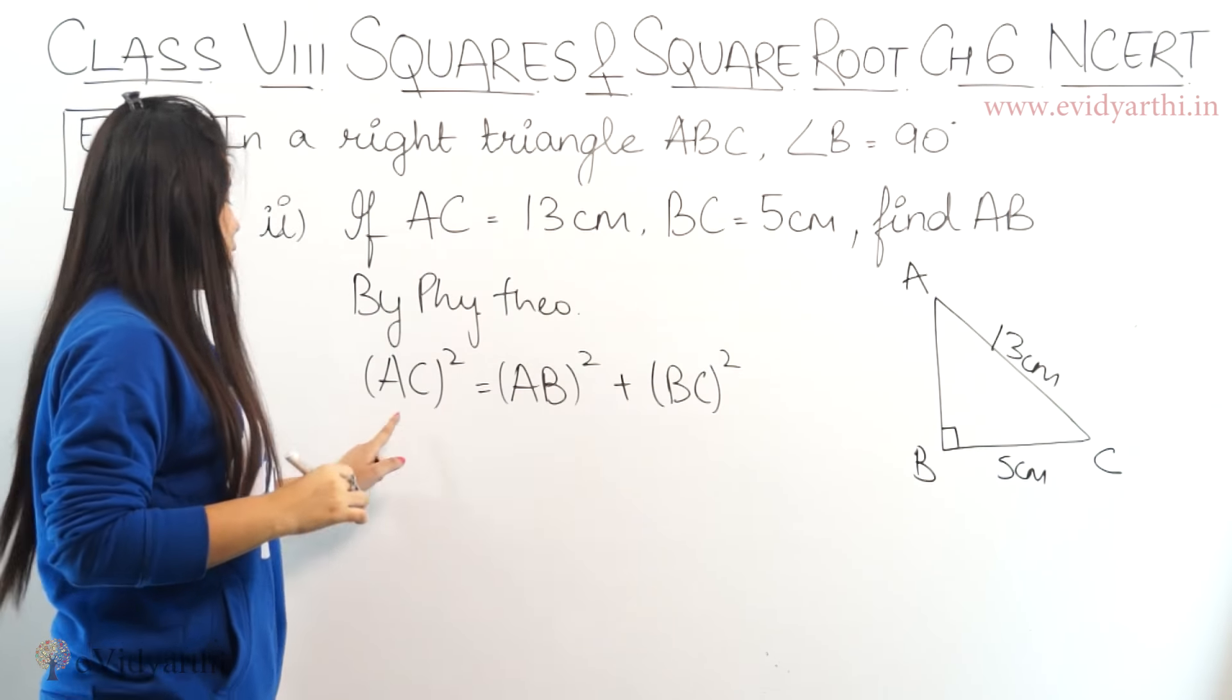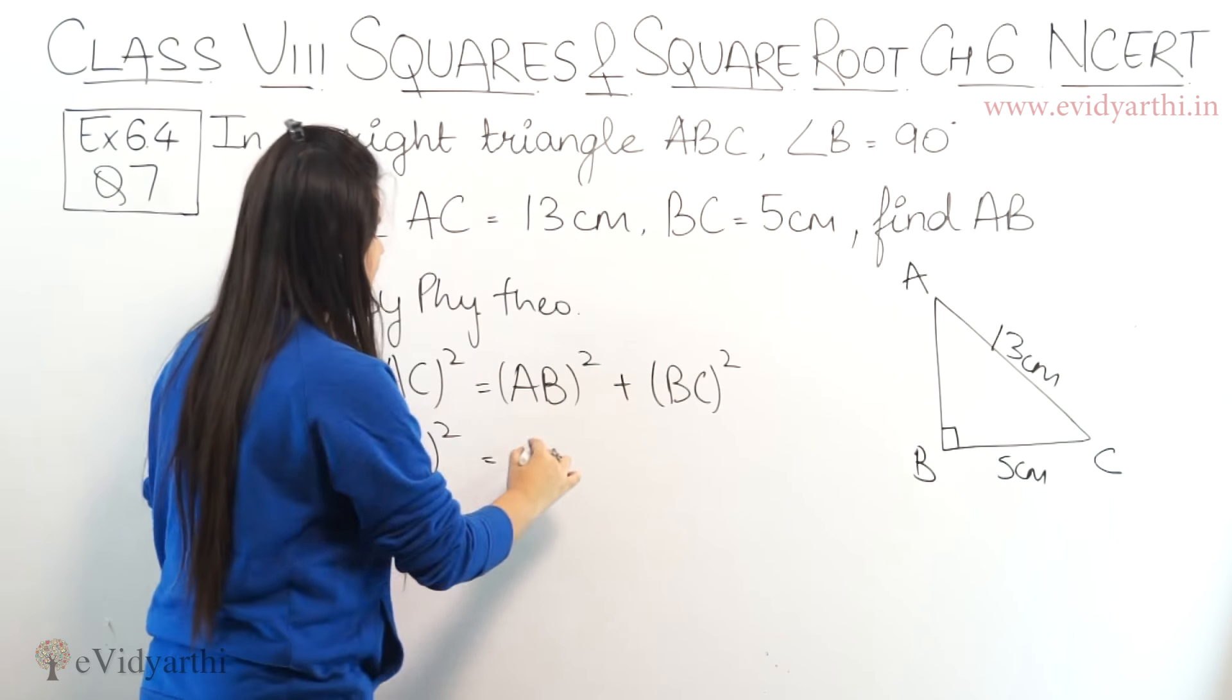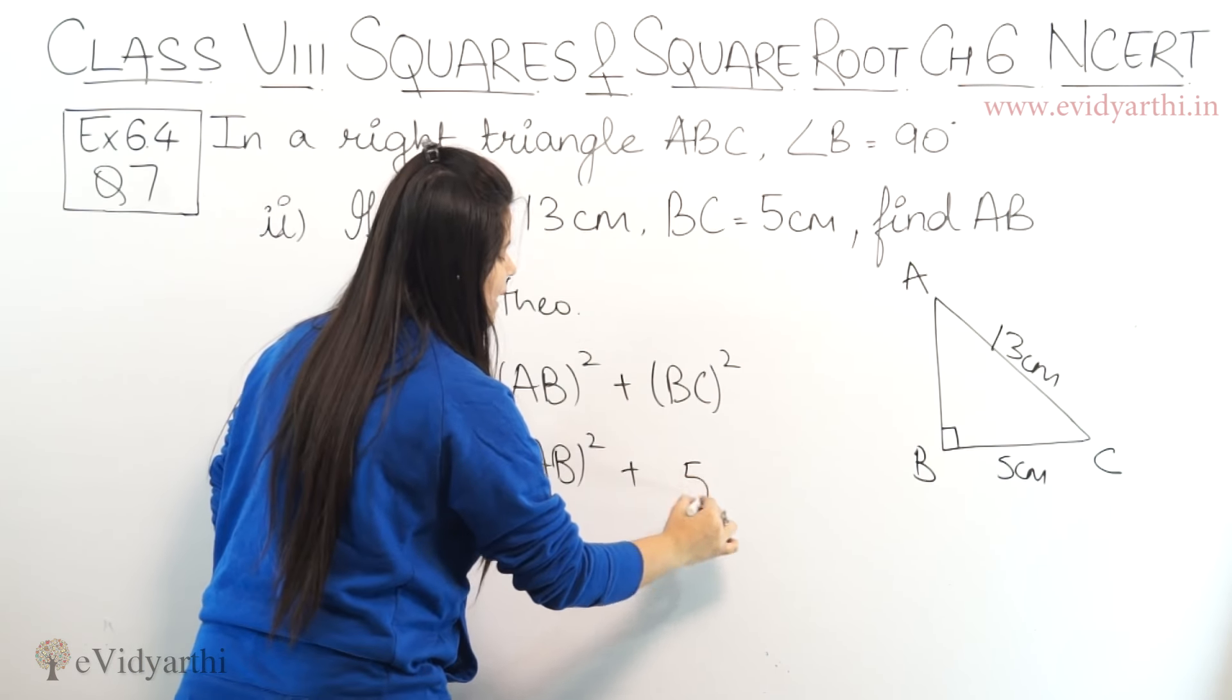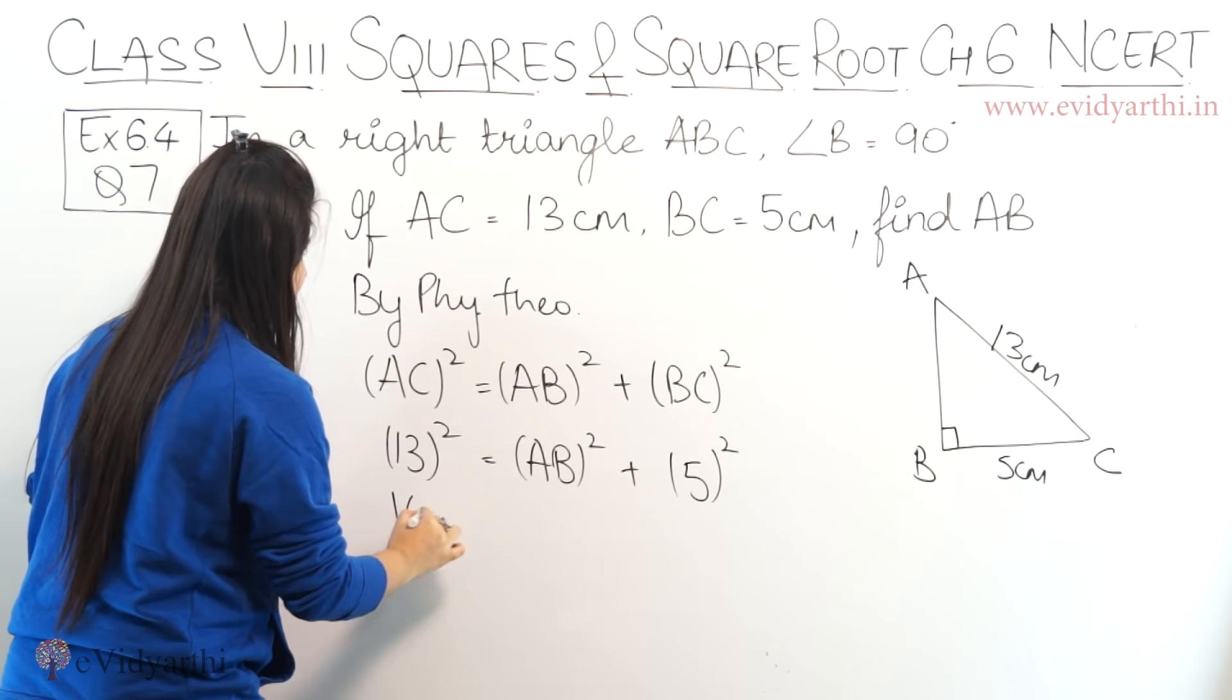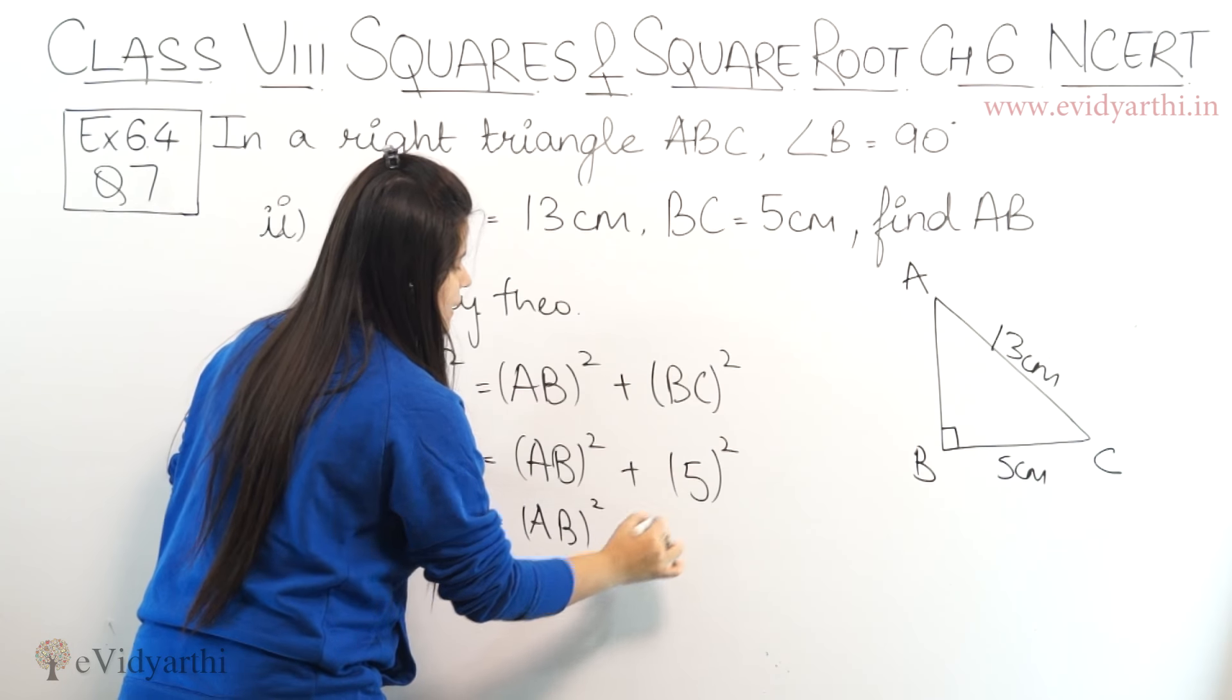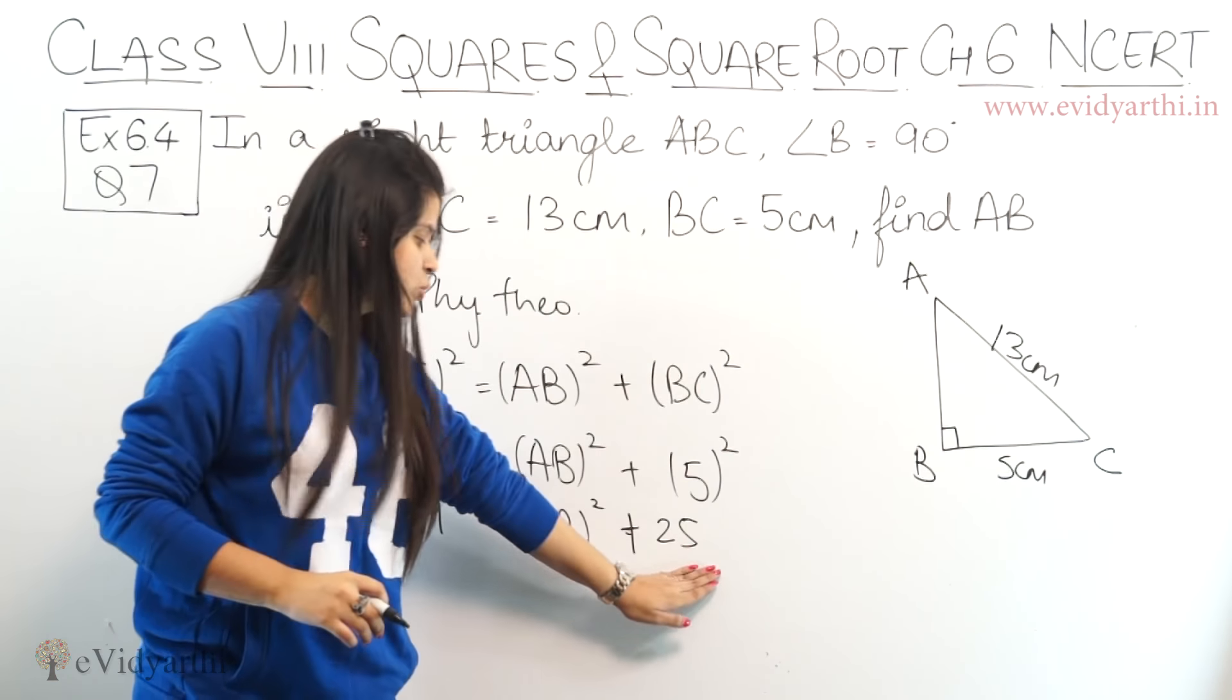Now AC value is given, that is 13 squared. AB we have to find, so we'll write it as AB squared, plus BC is given as 5, so 5 squared. Now 13 squared is 169, and this is AB squared as it is. Next we have 5 squared, so 5 squared is 25.